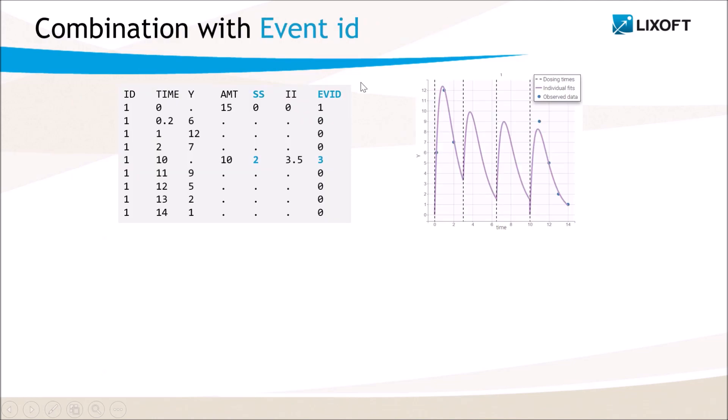The column steady state can be combined with the column event ID. If event ID has a value 3 or 4, it defines a washout just before the dose on the same line, here at time 10. Even if there is a tag on the steady state column, there is no washout before the additional doses.